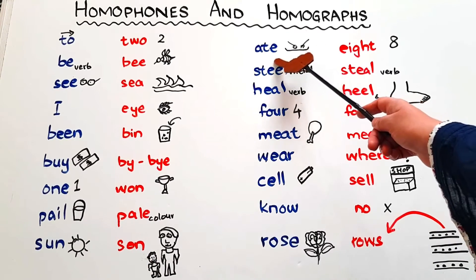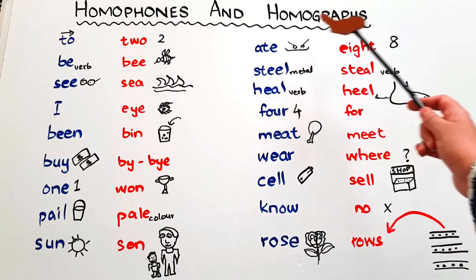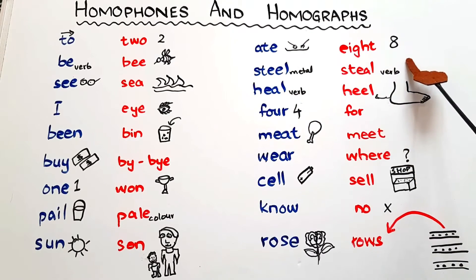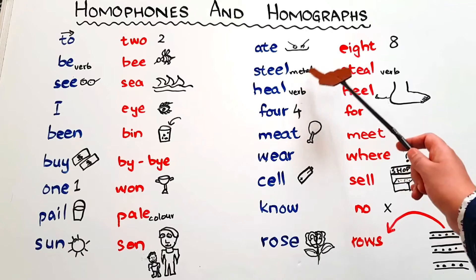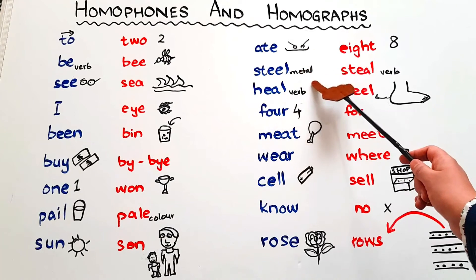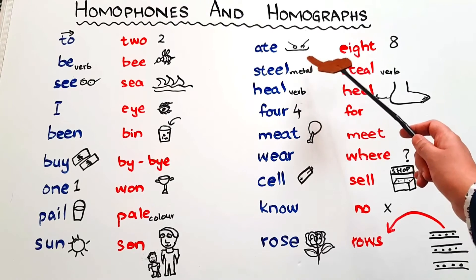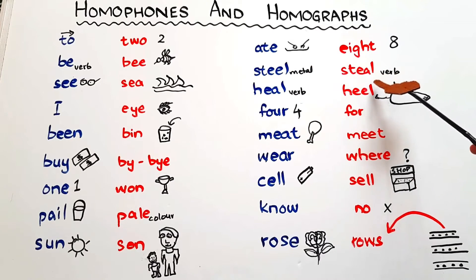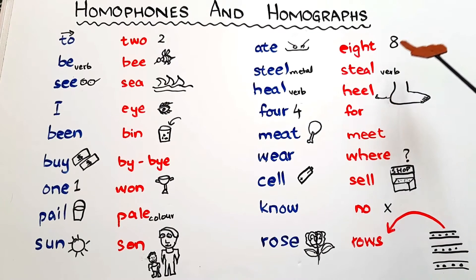Then we have the word 'ate' — the second form of the verb 'eat' — and the number 'eight'. Then 'steel' — a metal, as in a steel watch or steel cupboard — and 'steal', a verb meaning to take someone else's belongings without permission.